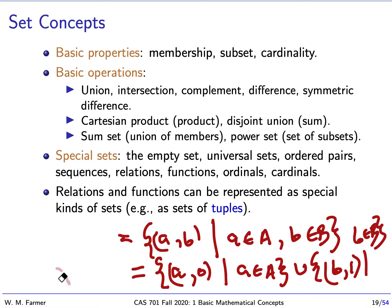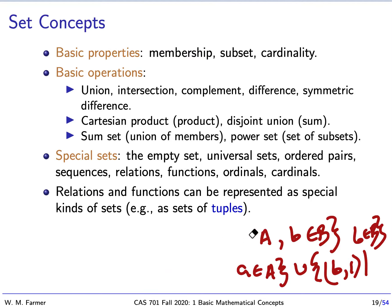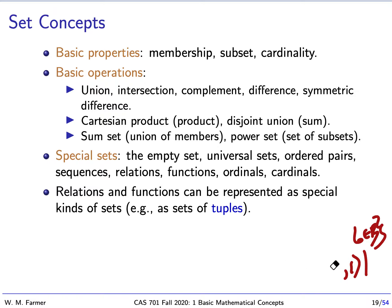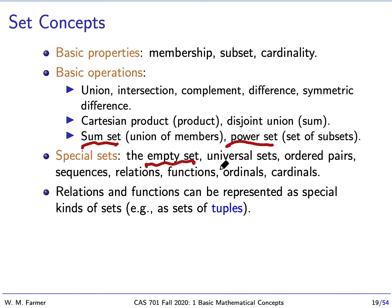We also have the sum set, which is the union of all the members of a set. And we have the power set — the set of all subsets. We can have various special sets: the empty set contains no members. There are universal sets. We have ordered pairs, sequences, relations, functions, ordinals, and cardinals. Cardinals are ordinals used to measure the size of sets.